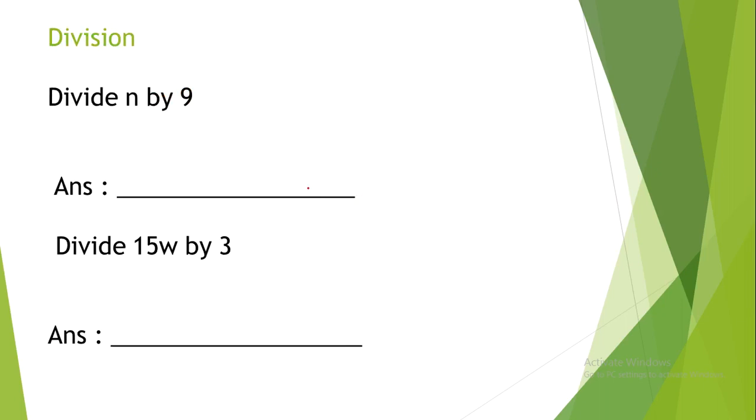Division. Divide n by 9. In algebra, n divided by 9 is written as a fraction. So, n divided by 9 equals n out of 9.